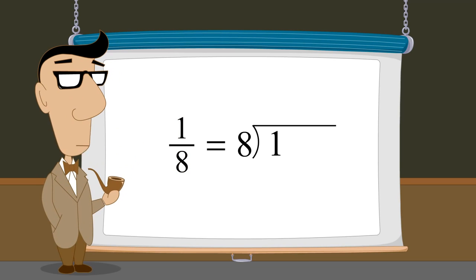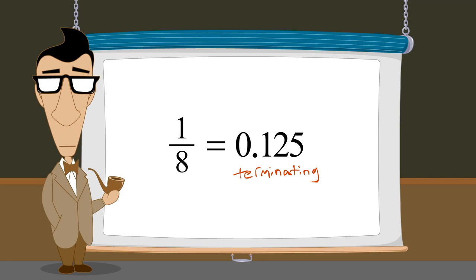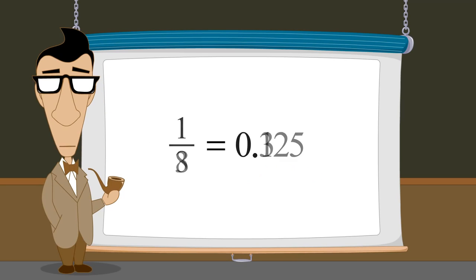The result of this division will be a decimal number which is equivalent to the fraction. This decimal number will either terminate, meaning that it can be represented with a finite number of digits, or it will have one or more digits which repeat forever.